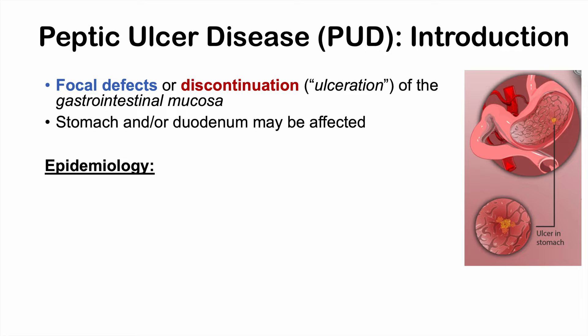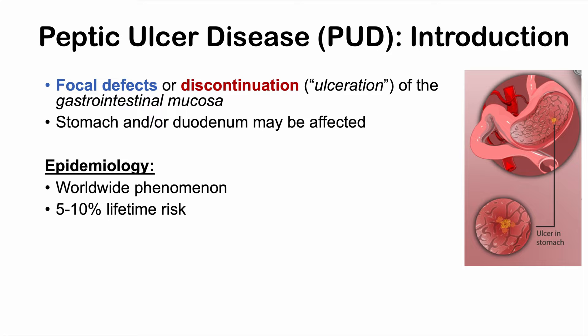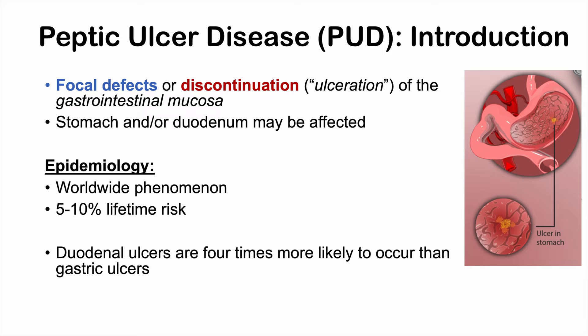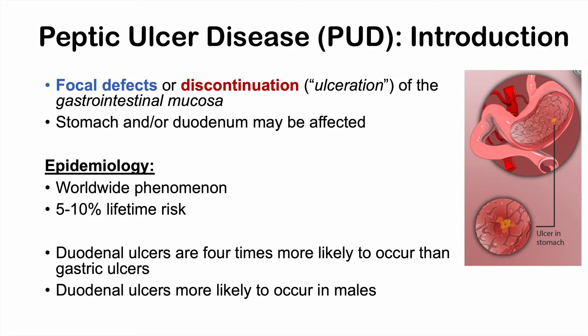What is the epidemiology of peptic ulcer disease? It is a worldwide phenomenon, occurring in all countries, and in a significant portion of the population — roughly 5–10% have a lifetime risk of developing it. Duodenal ulcers are four times more likely to occur than gastric ulcers, and duodenal ulcers are more likely to occur in males.